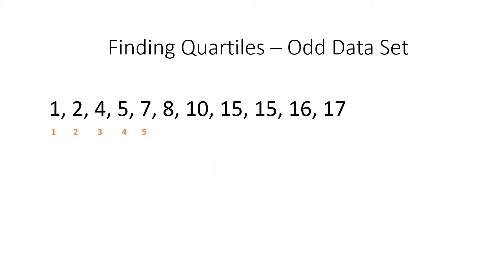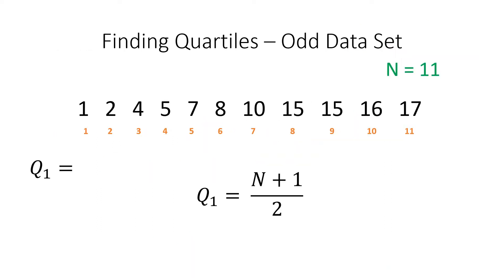We will take this data set. Immediately we see our n is equal to 11. To find Q1 in an odd data set, we do not include the median. Even though our n is equal to 11, we will only take the first section of this set.